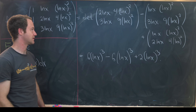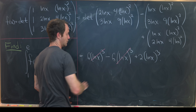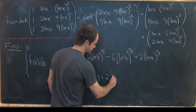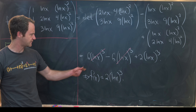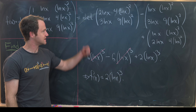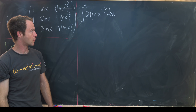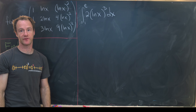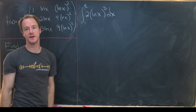There's a simplification: terms cancel, and we find that f(x) = 2(ln x)³. So that's the function we want to integrate from 1 to e.